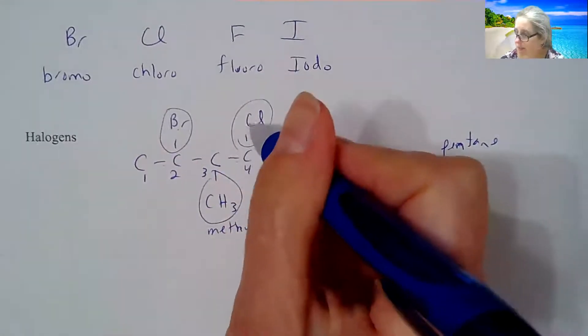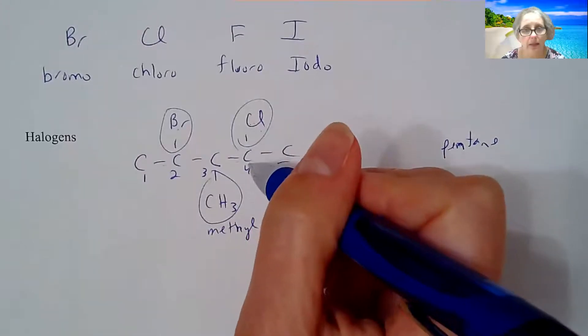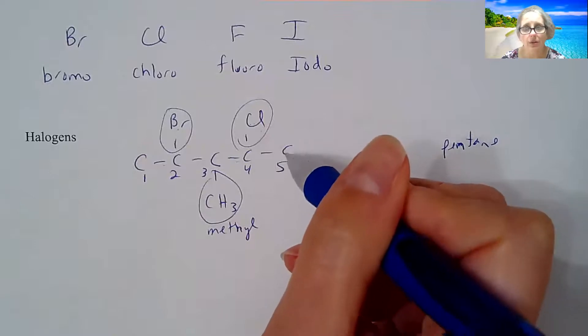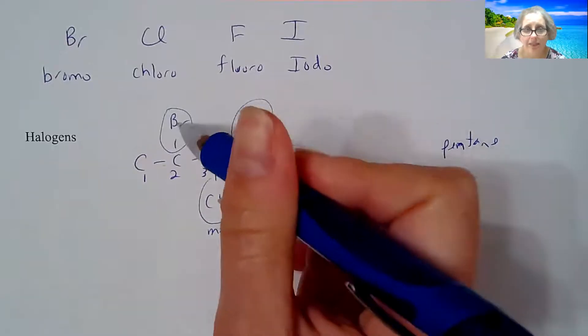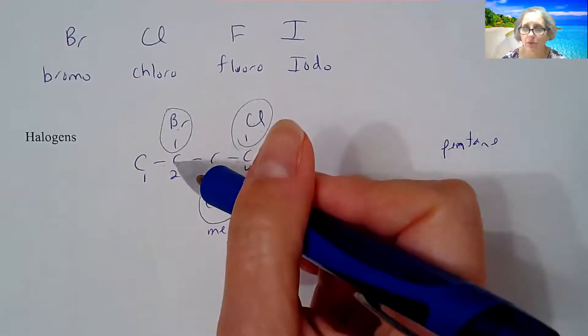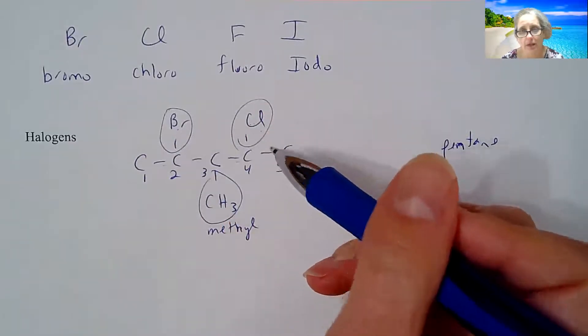Now, if I happen to have this methyl group on this chlorine, and there was a double substitution here, then I would actually start on the right. So if I have a tie, essentially, it's going to go to the alphabet. If I have more branches on one side versus the other, you're going to go with the more branch side.